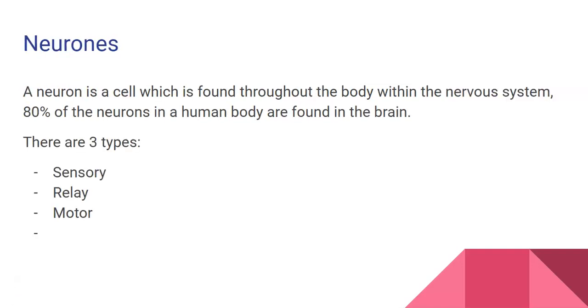A neuron is just a cell found throughout the body in the nervous system, and about 80% of our neurons are actually found in the brain. There are three main types we need to know about: sensory, relay, and motor neurons.